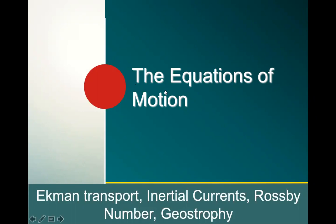We've been looking at the equations of motion that control the motion in the ocean. What we're going to do right now is go back and think about Ekman transport, and also inertial currents — looking at how inertial currents give us the non-dimensional Rossby number, and how we can use that to determine what kind of flow we have, and also to see if we have geostrophy.